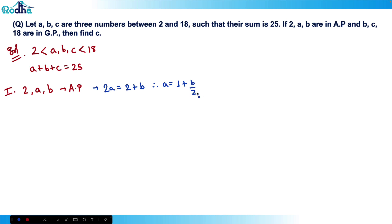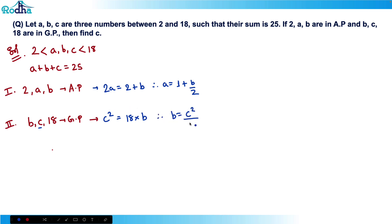For the second condition, b, c, 18 are in GP, so the middle term squared: c² = 18b, giving b = c²/18. Now substituting both into the main equation a + b + c = 25: a = (1 + b/2) = (1 + c²/36) and b = c²/18, so we get (1 + c²/36) + c²/18 + c = 25.